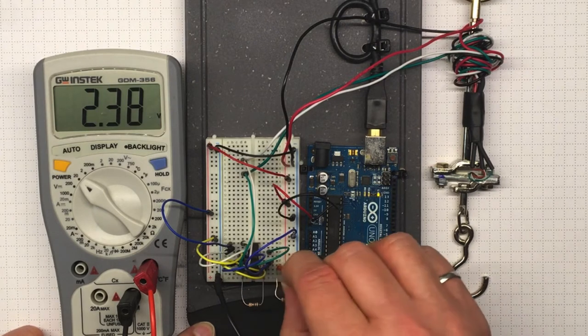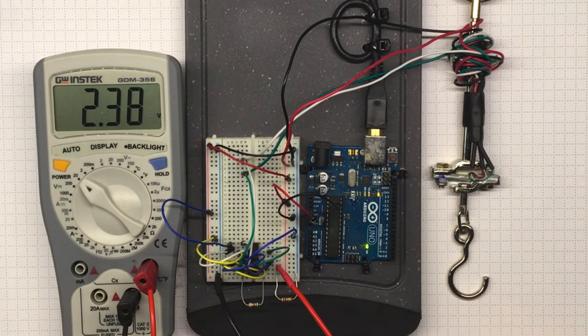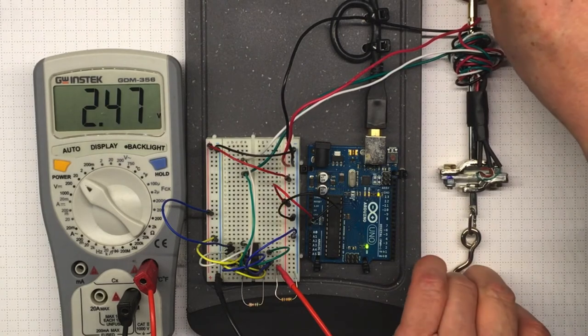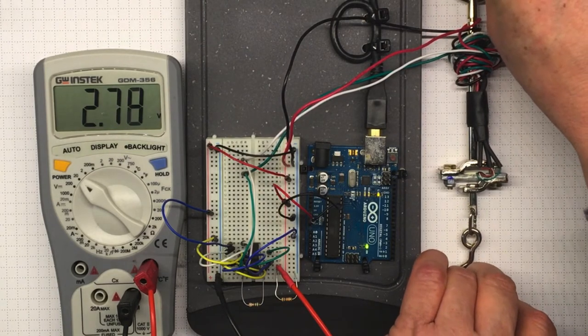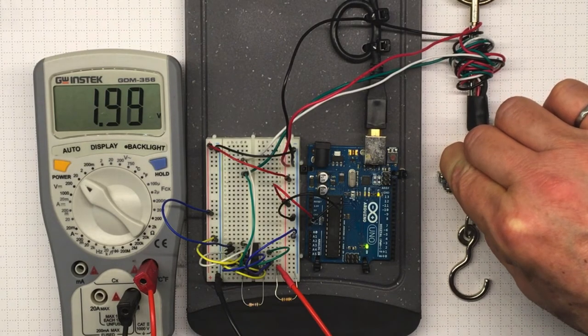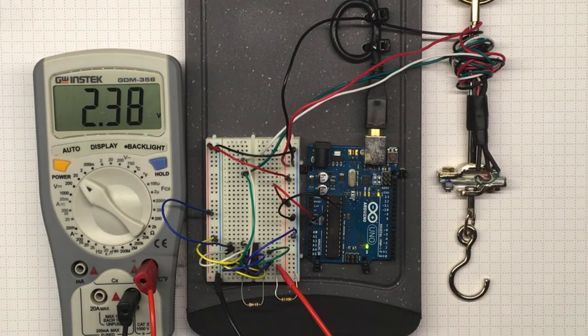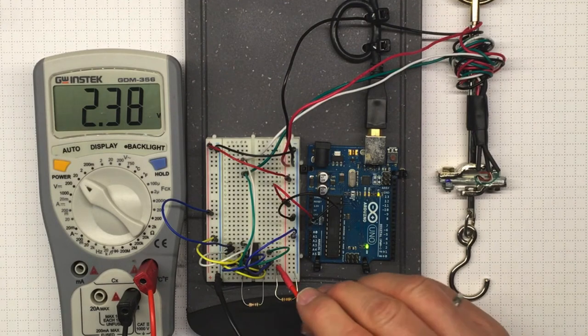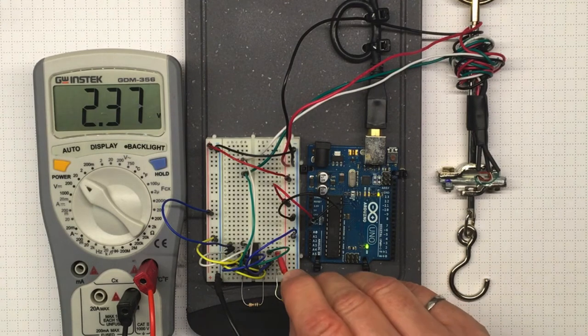So let's look at the output. There we are at 2.38. If I increase the tension, the voltage goes up. If I compress, the voltage goes down. And the center of the range is the pseudo-ground value at 2.5 volts.